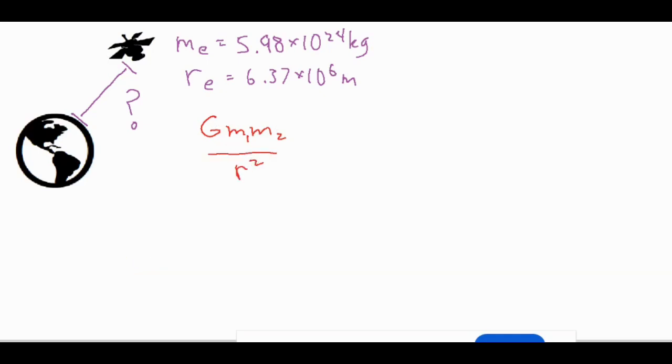Where G is the constant 6.67 times 10 to the negative 11th, m1 and m2 are the two masses involved. Obviously in this case it's earth and the satellite.